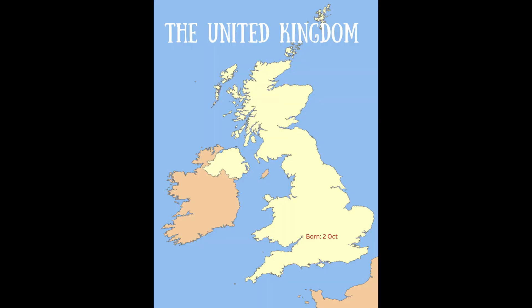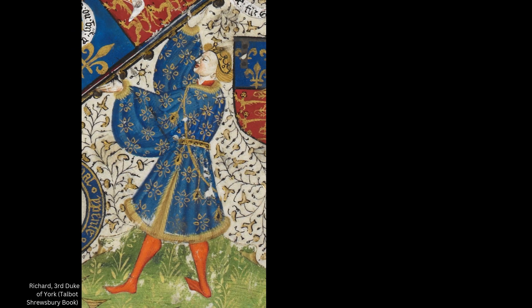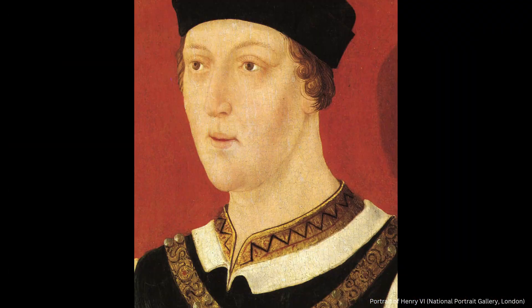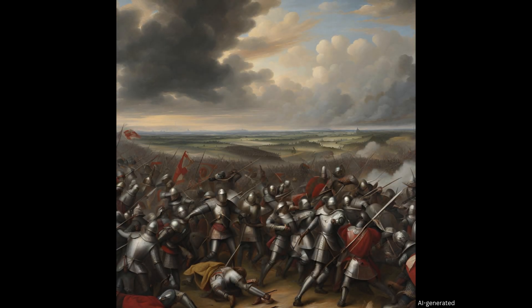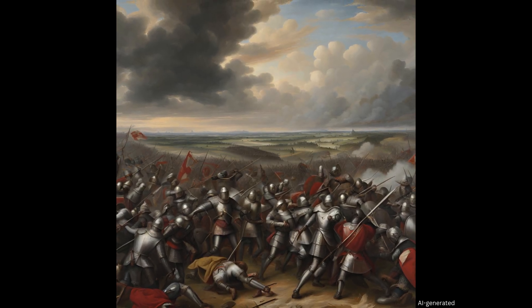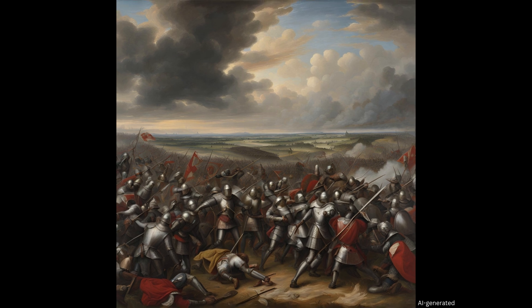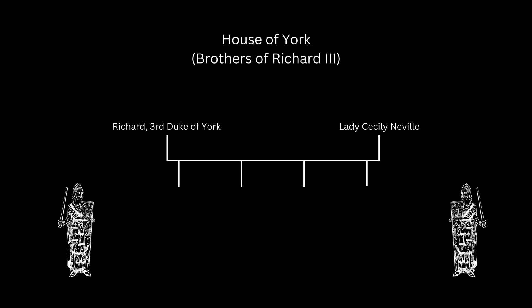Richard III was born on the 2nd of October 1452, at Fotheringhay Castle in Northamptonshire, to Richard, Duke of York, and Lady Cecily Neville. The Duke of York was a potential claimant to the English throne and opposed the rule of King Henry VI, who was descended from the Dukes of Lancaster. Richard's childhood was thus marked by a series of civil wars known as the Wars of the Roses, where the House of Lancaster and the House of York fought for the English throne. As the Duke of York's fourth son to survive to adulthood — the other three being Edward, Edmund, and George — Richard was not likely to become King of England at the time of his birth.